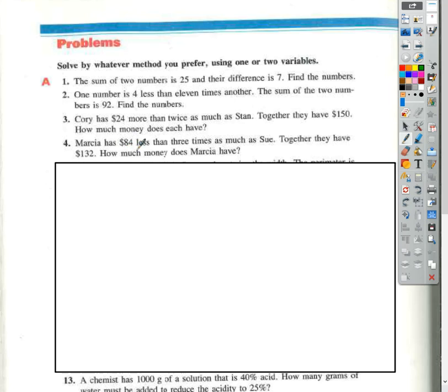Marsha has $84 less, so that's minus 84, three times as much as Sue. Together, they have $132. So together, that means M plus S is equal to 132.